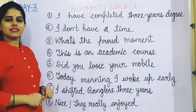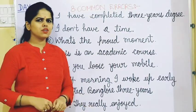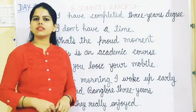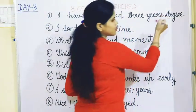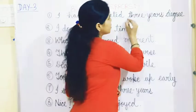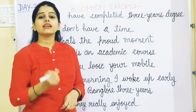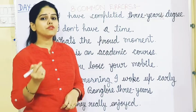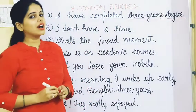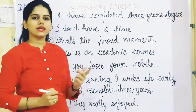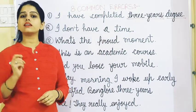The first sentence is: I have completed 3 years degree. What's wrong with that? The mistake is the S. Because '3 years' is an expression and it acts as an adjective for the noun 'degree', so we can't use S here. The correct sentence is: I have completed a 3 year degree.